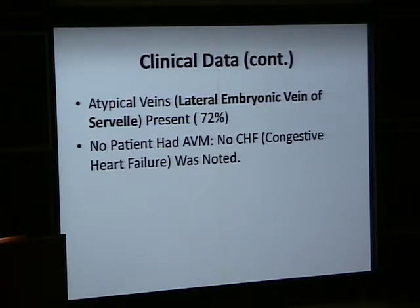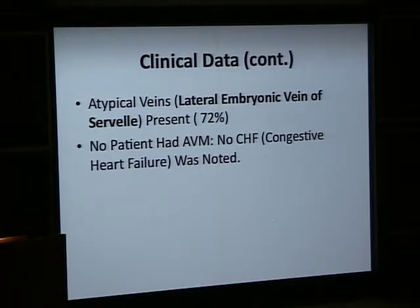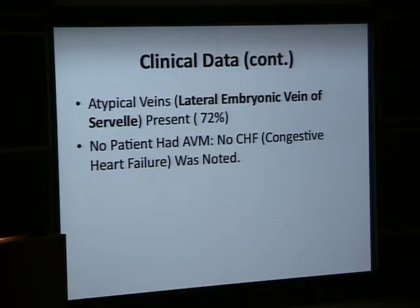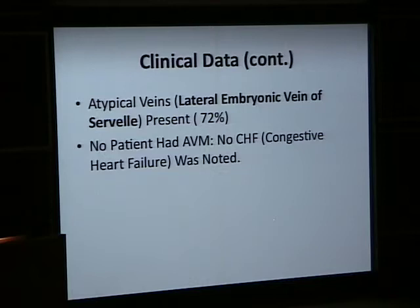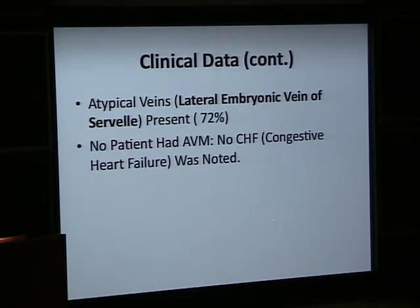There is a syndrome called Parkes-Weber syndrome that needs to be distinguished from KTS. If you look on the internet, you will see 'Klippel-Trénaunay-Weber syndrome' — there really is no such syndrome. Parkes-Weber syndrome has an arteriovenous malformation, which distinguishes it from KTS, which does not have AVM. This is a very important distinction, because a patient with Parkes-Weber syndrome could develop congestive heart failure due to the high-flow element of that lesion.